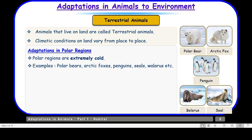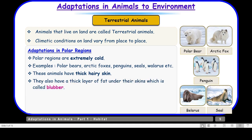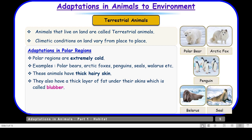These animals have thick hairy skin and a thick layer of fat under their skin called blubber, which protects them from extreme cold. Due to scarcity of food, animals like bears, frogs, and snakes sleep through the winters — this winter-long sleep is called hibernation. Some animals hibernate because food is not enough and their physical activities slow down. They get energy from stored fat in their bodies.